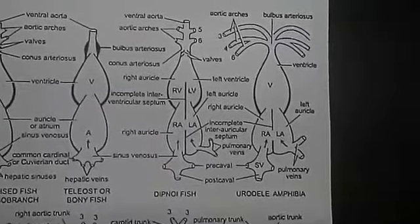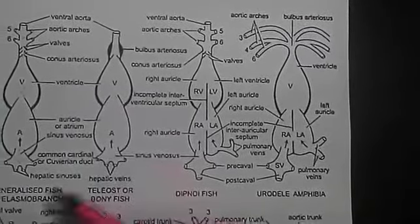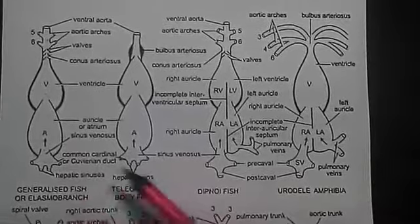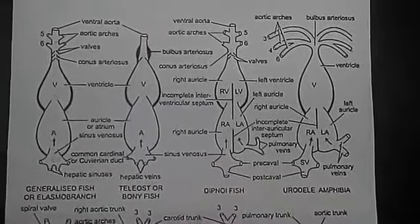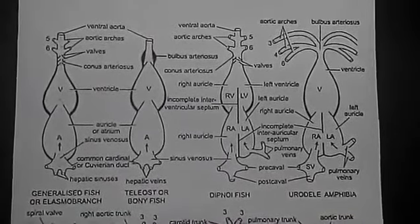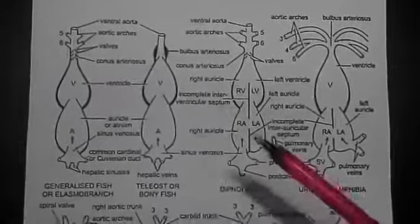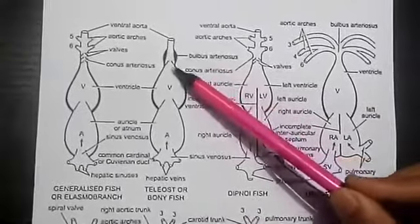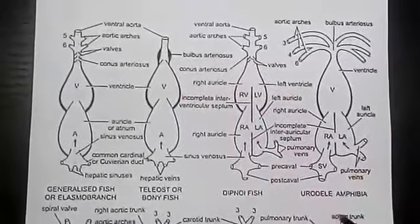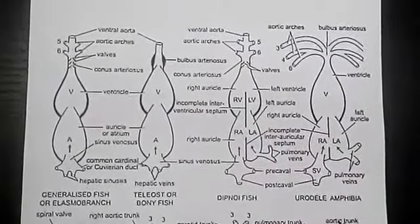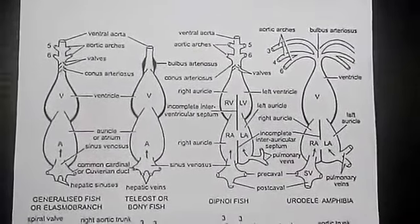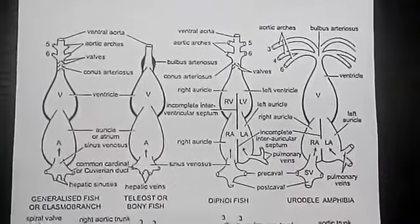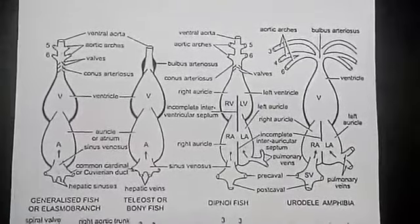In teleost fishes, the heart resembles that of elasmobranchs. The proximal part of ventral aorta close to conus becomes greatly enlarged and the conus becomes shortened. This enlarged portion is thick-walled and it is called bulbus arteriosus. It is elastic and dilates at the time of ventricular contraction.